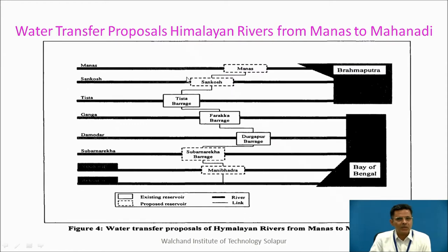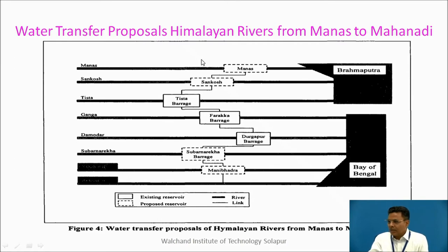Water transfer proposals of Himalayan rivers flow North to South through rivers Manas, Sankos, Tista, Ganga, Damodhar, and Suvarnarekha. The Manas reservoir, Sankos reservoir, and Tista barrage are proposed reservoirs, while Farakka barrage and Durgapur barrage are existing. A new Suvarnarekha barrage reservoir is proposed from which water will be transferred to the Manibhadra proposed reservoir, and thereafter water will flow to Mahanadi towards the South.